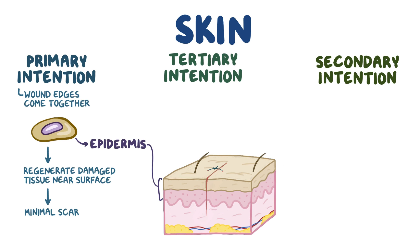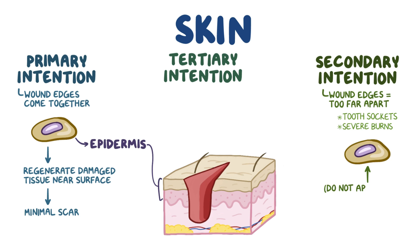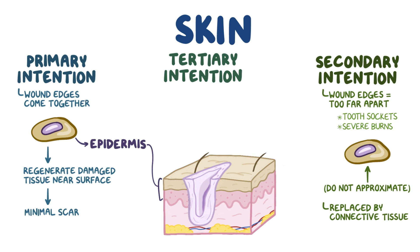Healing by secondary intention occurs when the wound edges are too far from one another, and this can be a consequence of significant tissue loss or if there's an object embedded in the wound that prevents the edges from coming together. Examples of healing by secondary intention include tooth extraction sockets or severe burn injuries. Since the stem cells in these wounds do not approximate, the wound is replaced primarily by connective tissue that grows from the base of the wound upwards.